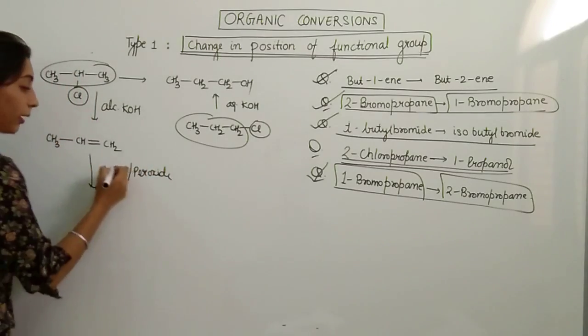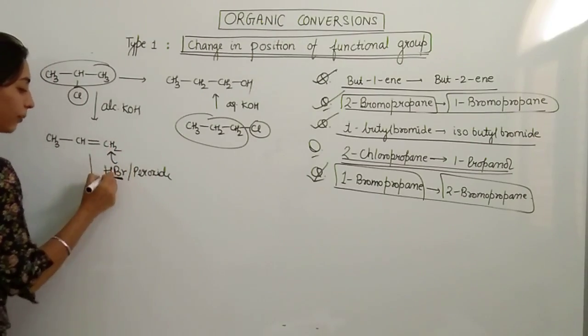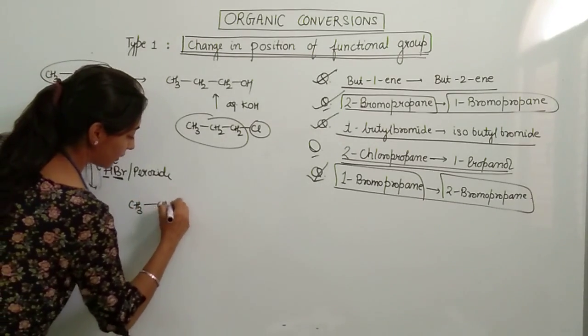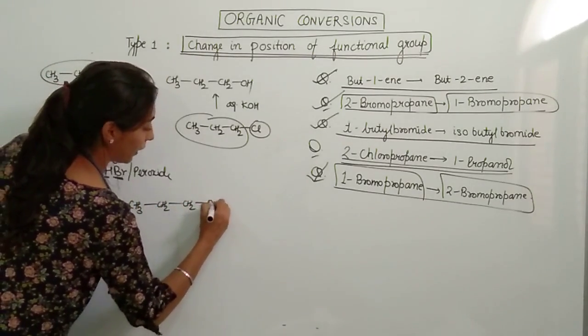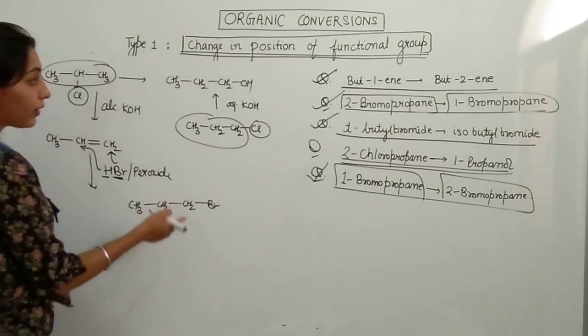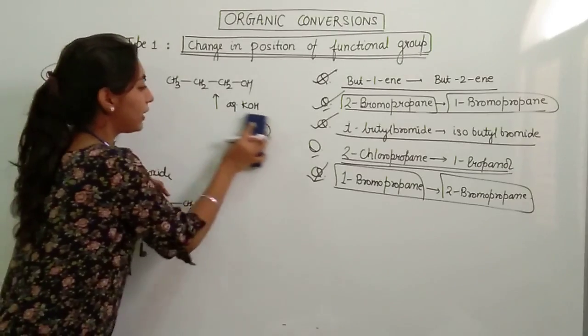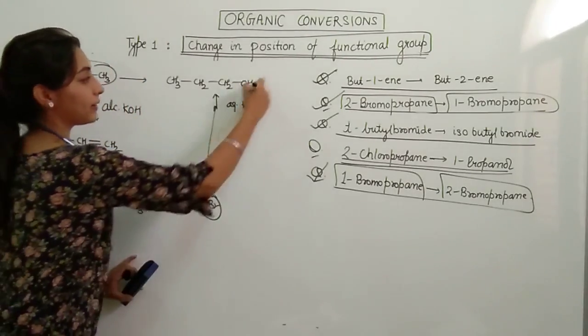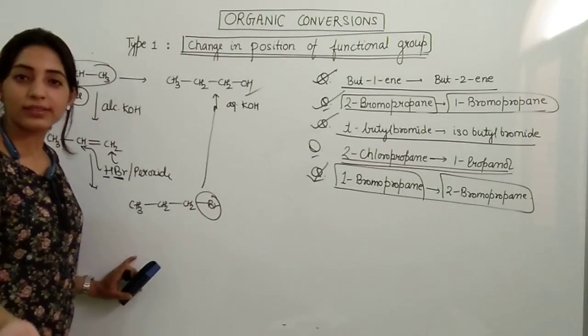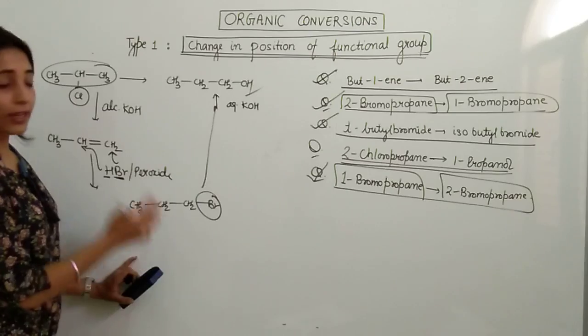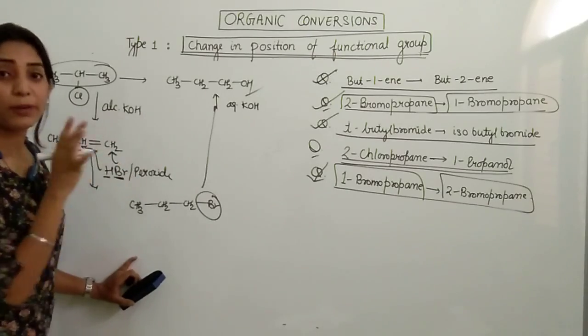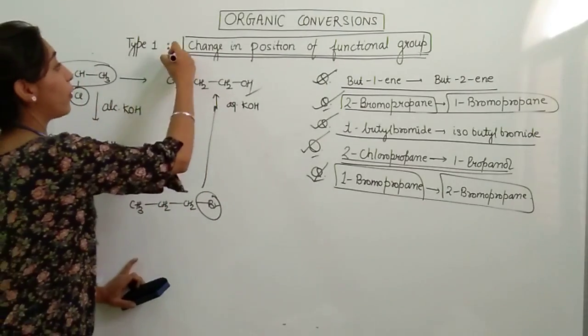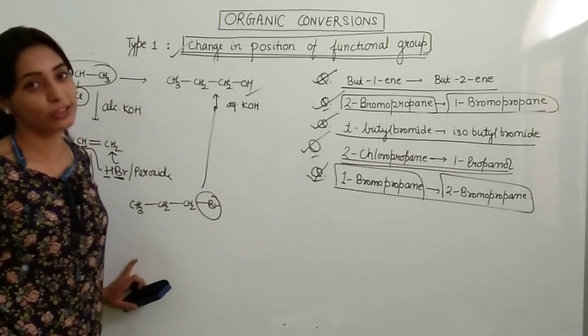So what you have to do is simply add HBr in the presence of peroxide. What will happen? Br goes to this carbon, H goes to this carbon. We get CH3-CH2-CH2Br. Now if I do not want Br, I can simply add aqueous KOH and then Br can be replaced and we get the answer. This is what the question was. So not directly but I think indirectly even this question can be answered if you know this type of change in the position of functional group.